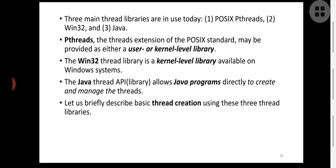Win32 thread library is present at kernel level and is associated with the Windows operating system. The third one is the Java thread API or Java thread library, which allows Java programs to directly create and manage threads.